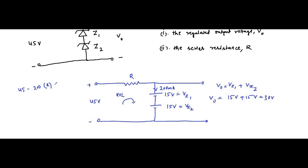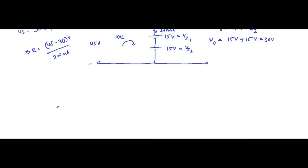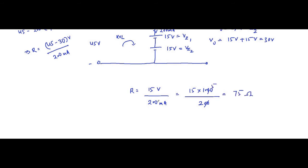From KVL: R is equal to 45 minus 30 volt divided by 200 milliampere. Always pay attention to units because a mistake in units will give the wrong answer. R is equal to 15 volt by 200 milliampere. Converting 200 milliampere to ampere gives 200 into 10 to the power minus 3. Therefore the value of R is equal to 75 ohm.